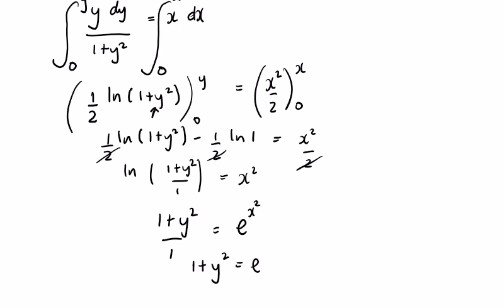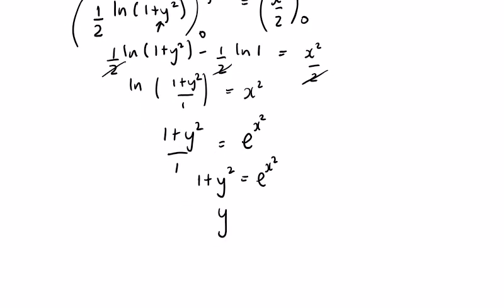If you want to cross multiply by the 1, that equals e to the power of x squared. Two more stages: y squared equals e to the power of x squared minus 1. So y would have to be the square root of e to the power of x squared minus 1.